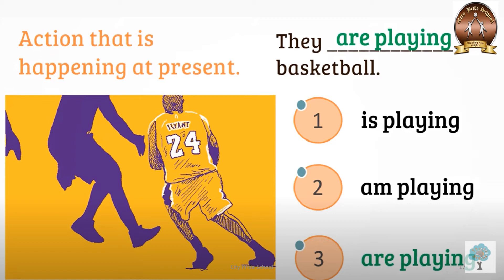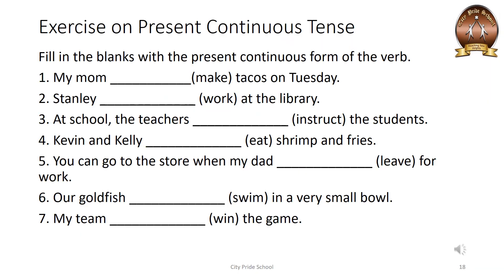I hope now you have understood how to use the verbs in a sentence. In present continuous tense, we always use helping verb, main verb, and ing form — that's why it is a continuous tense. We all have understood what present continuous tense is and what its rule is. Present continuous tense means the action which is happening now, which is continuous, which is going on.